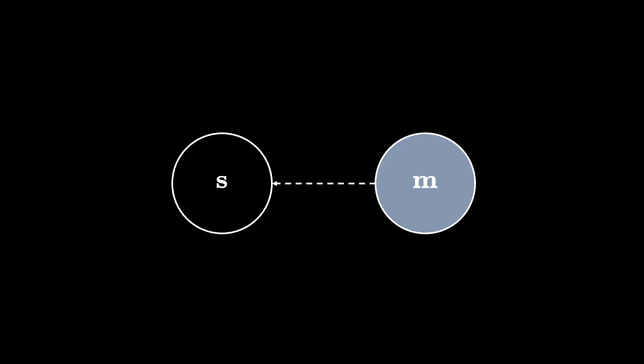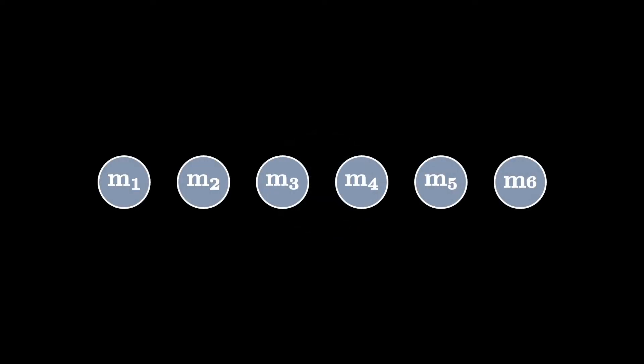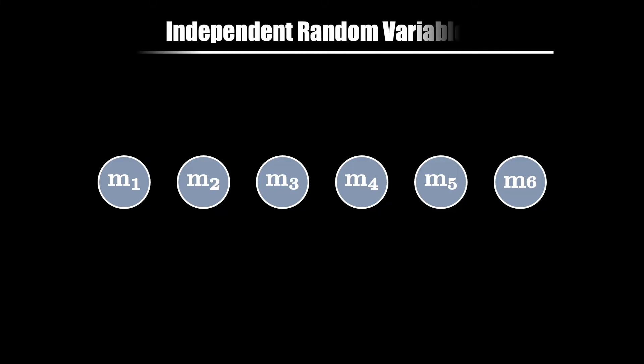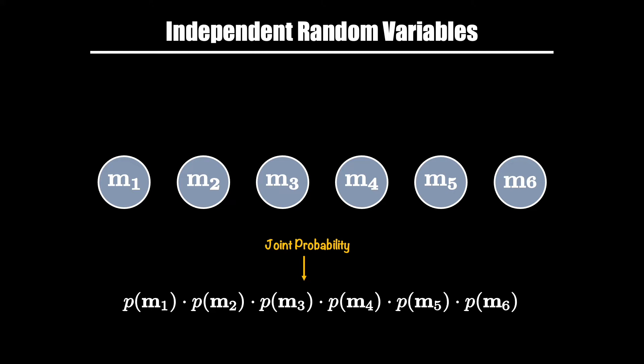Coming back to our latent variable or state estimation model. Let's spend a minute looking at how we can scale our thinking when we have more than one random variable. Here I have picked the measurement variable as an example, but this concept can be explained using state variables as well. A phenomenon generally consists of many random variables, and in some cases, while they jointly result in a phenomenon, they are independent of each other. So we can express the joint probability simply as the product of individual or marginal probabilities of our random variables. This makes computations and factoring very easy, but is not necessarily reflective of the sophistication and complexities that our physical world has.